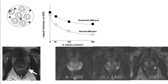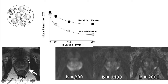Another application of DWI is prostate imaging. We know that prostate cancers commonly arise in the peripheral zone. However, because the peripheral zone has a normal high signal on T2, this will very much reflect on the DWI because of the T2 shine-through effect.